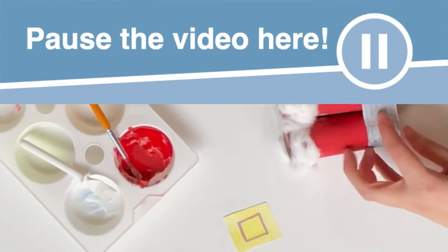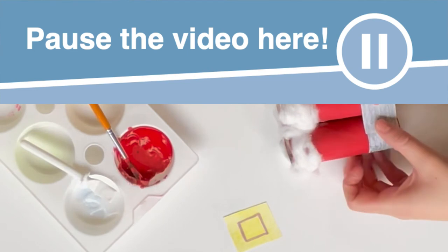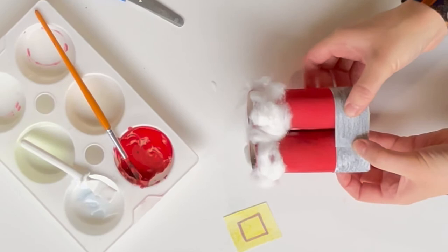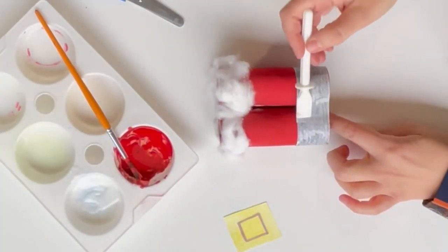Pause the video here until you are ready for the next step. Finally, take your yellow square and secure it in place on Santa's belt.